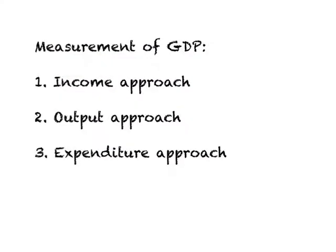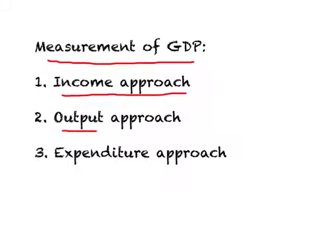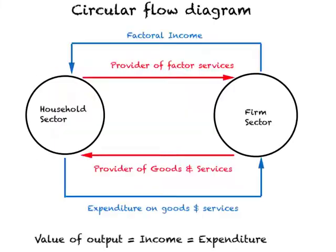There are three ways we can measure GDP. One way is from the income side, called the income approach to measurement of GDP. Another way is the output approach. And the third way is through expenditure in a country, called the expenditure approach to measurement of GDP.